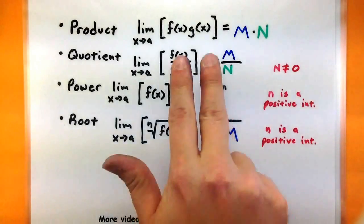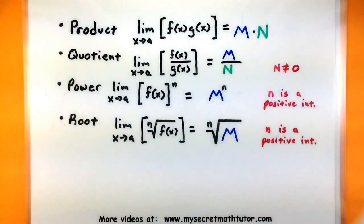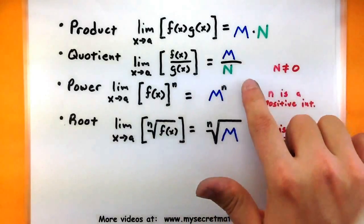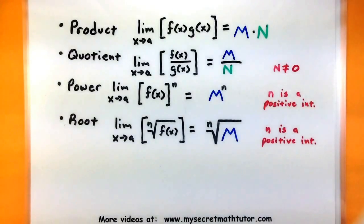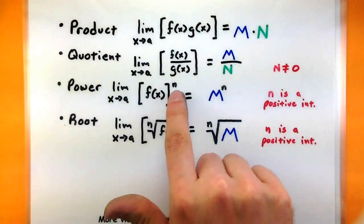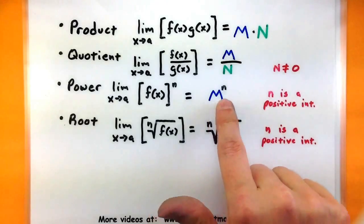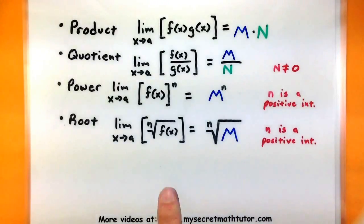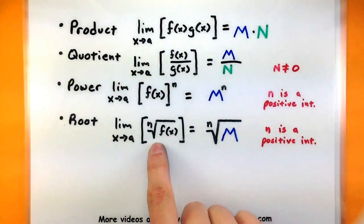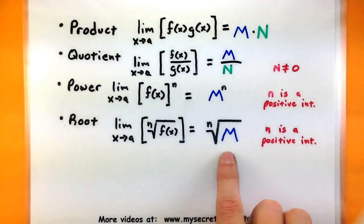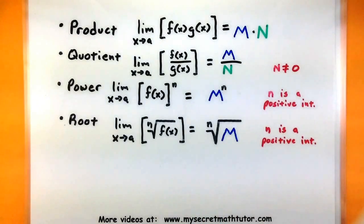In the product rule, it says if I multiply two functions together and I'm looking for their limit, then I take the limit of both their individual limits and multiply them. If I'm looking at the limit of two functions being divided, I divide their limit. If I'm looking at the limit of a function raised to a power, I take the limit and raise it to a power. And if I take the function inside of a root and I want to know that limit, then I can basically take that limit to the root.